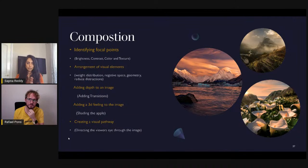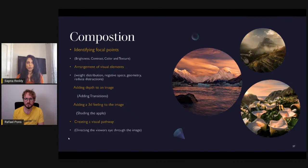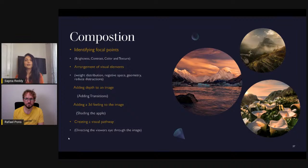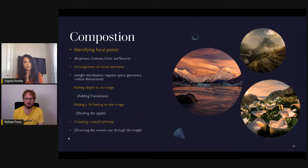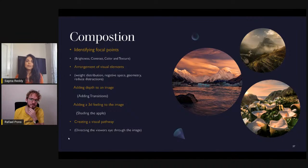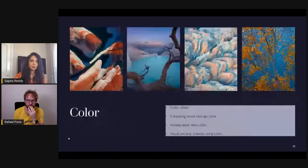In summary for the composition section: we learned how to identify focal points using brightness, contrast, color, and texture; how to arrange visual elements with weight distribution, negative space, geometry, and reducing distractions using border patrol; how to add depth with the concept of transitions; how to create a 3D feeling with shading the apple using angled light; and finally, creating a visual pathway where we are deliberate in how we direct the viewer's eye through the composition. Apply these principles consciously in the field and in post-processing for compelling images.